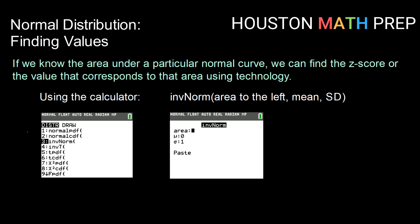Hey guys, welcome back. Houston Math Prep here. In this video we're going to take a look at finding values on a normal distribution using technology. If we know the area underneath a particular normal curve, we can use one of our distributions in our calculator to find the z-score or the value that corresponds to that area.